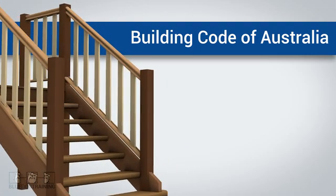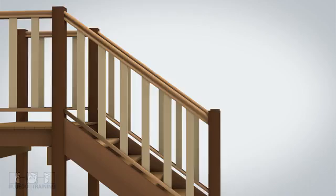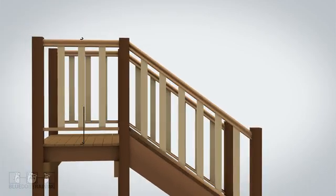The height of the balustrade for a stair must not be less than 865mm measured vertically above the nosing line. The balustrade for a floor or landing must not be less than 1000mm measured vertically above the top of the finished floor.